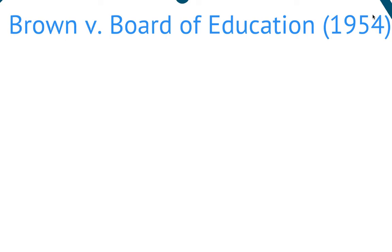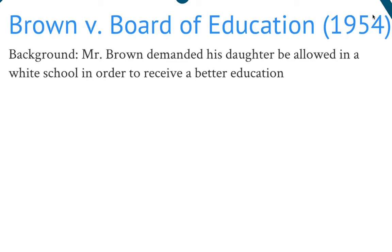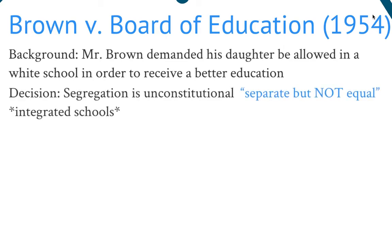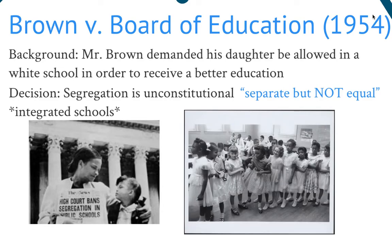Brown versus Board of Education is 1954 and is directly tied to Plessy versus Ferguson. Mr. Brown demanded his daughter be allowed into a white school in order to receive a better education. His daughter was having to walk past a white school in Topeka, Kansas to go to a Black school because segregation was still in effect, and the Black school did not have adequate funding, textbooks, desks, or materials. He sued the Board of Education in Topeka, Kansas, and won. The Supreme Court said that segregation is unconstitutional — that separate is not equal — and schools were integrated. Here are pictures of little Black girls and little white girls all in the same classroom.